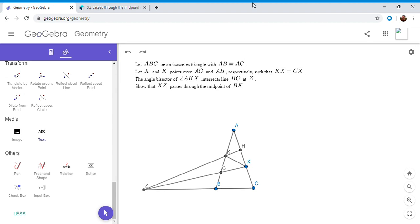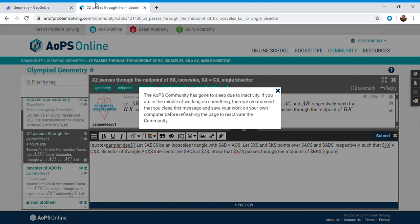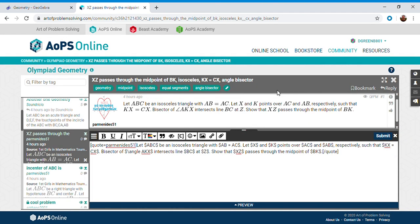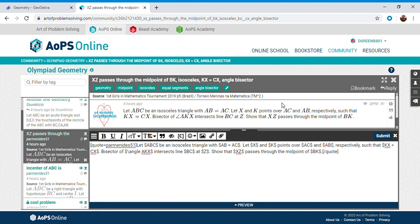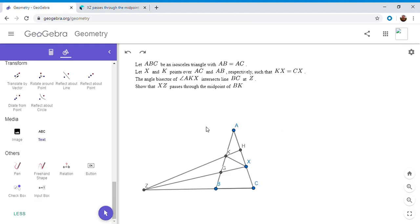Hi everyone, it's Michael. Here is a nice simple problem I found on the Art of Problem Solving forum. It's from the first Girls in Mathematics Tournament 2019 in Brazil. The problem says we have ABC is an isosceles triangle with AB equals AC.